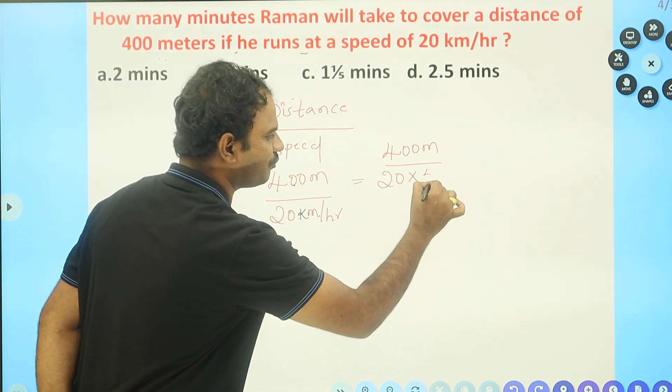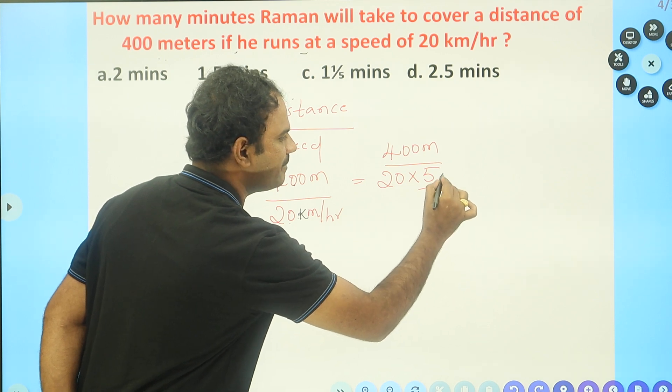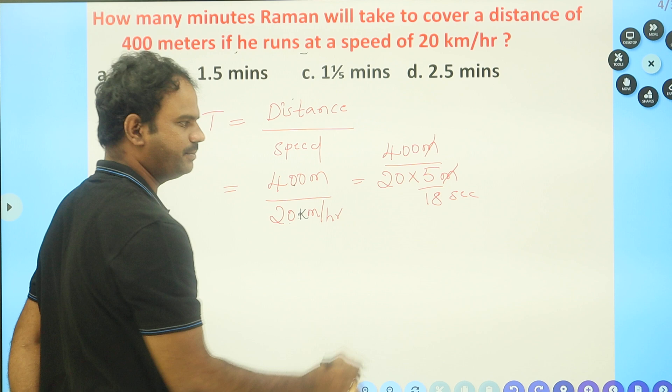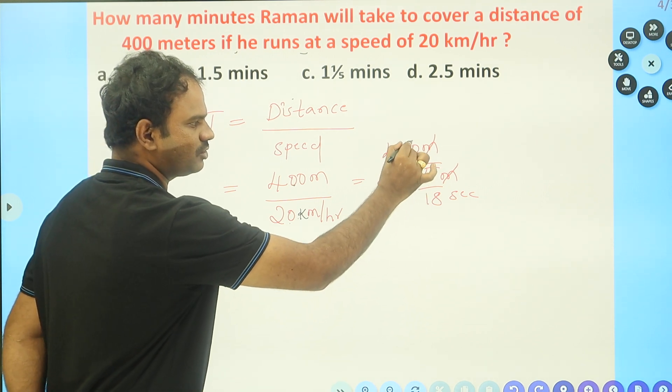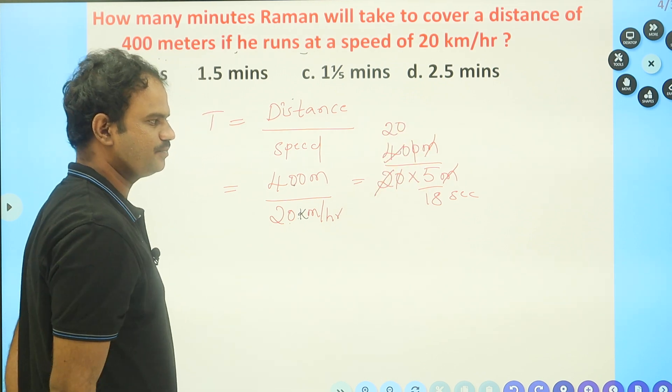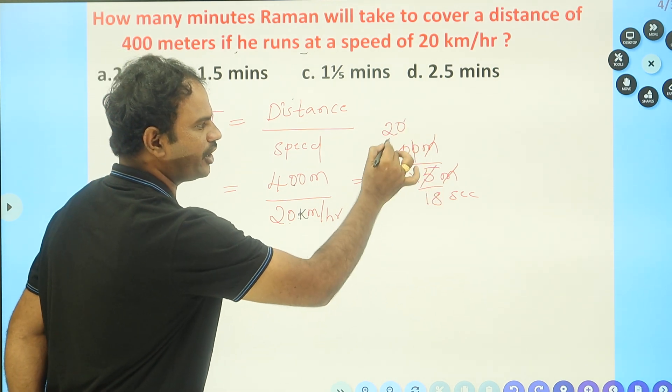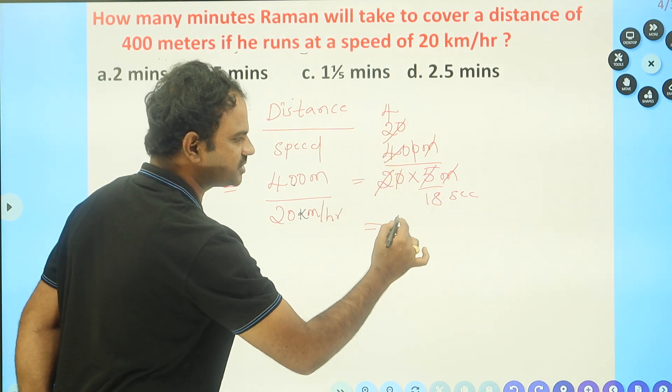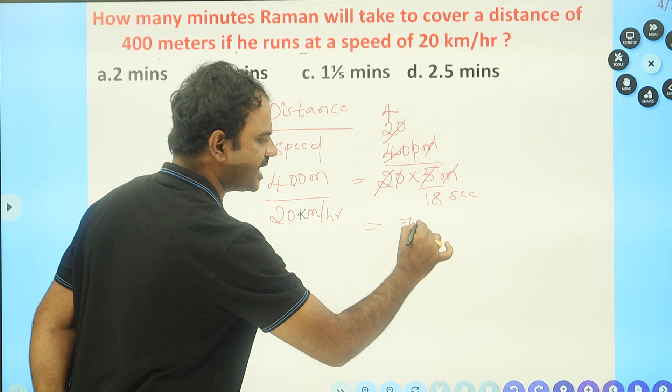Meter cancels with meter, zeros cancel. 2 into 20 is 40. Next, 5 into... how many times does 5 go into 20? Four times. So if 18 goes to the top, 18 times 4 is 72.